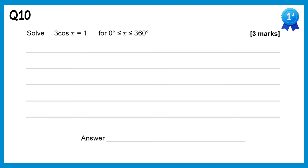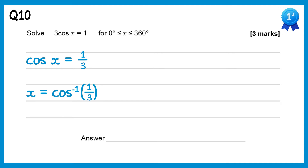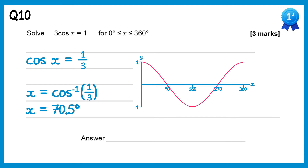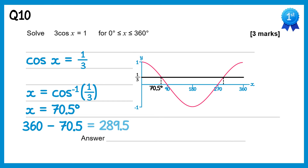For this question we need to rearrange first — divide both sides of the equation by 3. The left gives cos x and the right gives 1 third. Now we do inverse cos of 1 third; using your calculator that's 70.5 degrees. Looking at the cos graph and drawing a horizontal line at 1 third shows two solutions. We have the left one at 70.5, so using symmetry: 360 take away 70.5 is 289.5 degrees. So there are two solutions: 70.5 and 289.5.